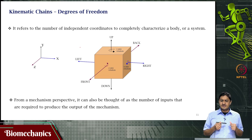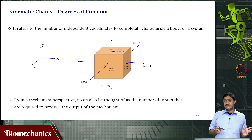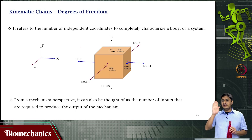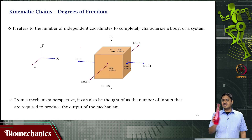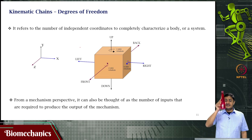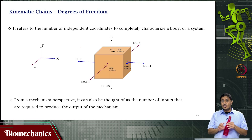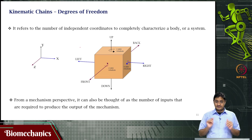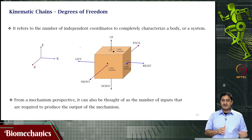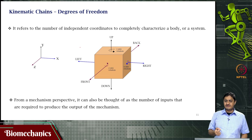We discussed the degrees of freedom for an object in 3D space — how many rotational and translational degrees of freedom it has. But if the same object is constrained to move only in the plane of the screen, then it can translate left to right, translate up and down, and rotate. These 3 motions are possible within the plane; any other motion is out-of-plane. So for planar movement, the body has only 3 degrees of freedom: 2 translational and 1 rotational.